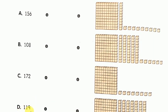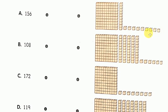Coming to question D, the number given is 119. 119 has 1 hundred block, 1 tens block and 9 ones cubes. You can see there is 1 hundred block, 1 tens block and 9 small ones cubes. So you should match D with picture 1.